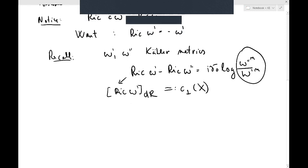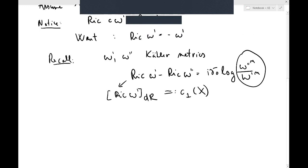So one thing that you get from here is that if this KE equation holds, then the cohomology class of your Kähler metrics has to be from the negative of c_1, right?